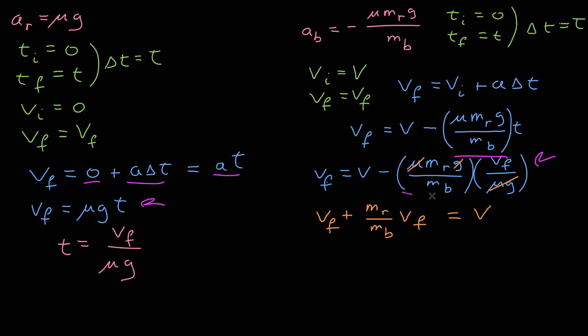And now if I bring this term over to the other side so I can combine my v finals — I have v final plus the ratio of the masses times v final is equal to the initial velocity.